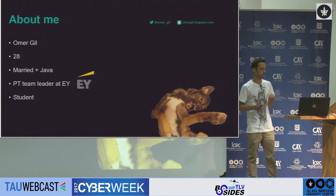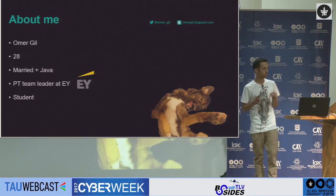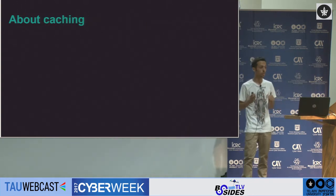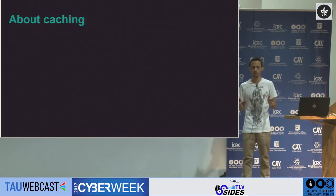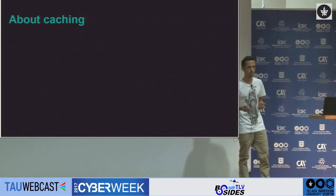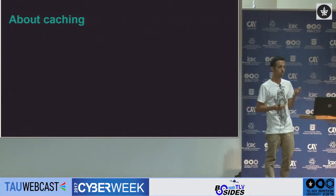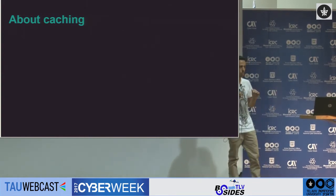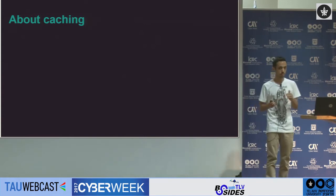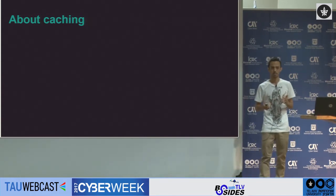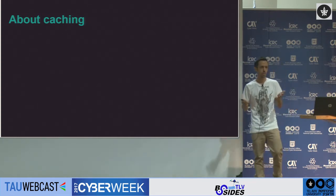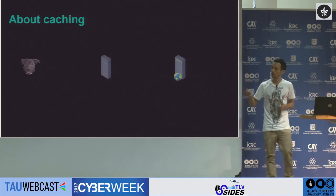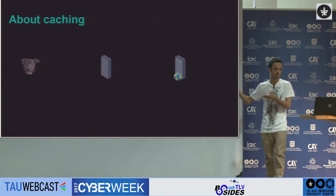In order to better understand how web cache deception works, let's start by explaining two important baselines. The first one is caching. We all know about caching — it helps reduce latency from the web server and serves users with their content faster. Browsers do caching, but that's not what we're talking about today. We're talking about servers that also function as a caching mechanism. Java here will be our end user, that's the web server, and in the middle is our caching mechanism.